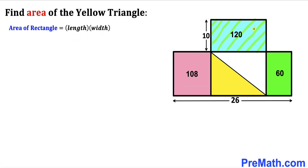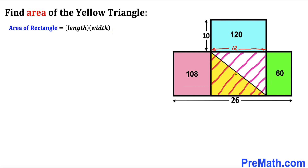Our very first step: let's focus on the blue rectangle. We know its area is 120 and its one side length is 10, so therefore the other side length has to be 12, because 12 times 10 gives us 120 using this formula.